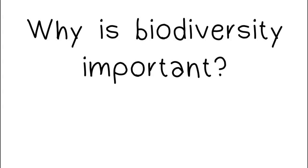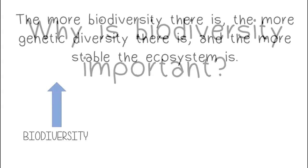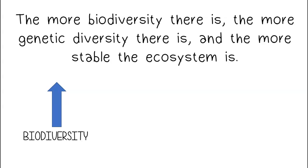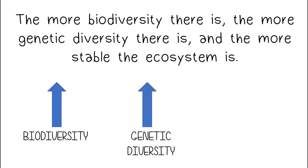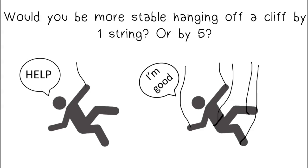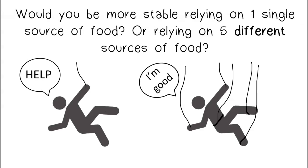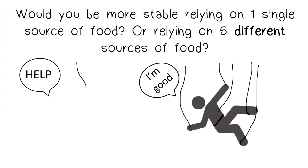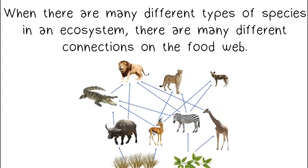Why is biodiversity important? Well, the more biodiversity there is, the more genetic diversity there is, and the more stable the ecosystem is. Would you be more stable hanging off a cliff by one string or by five? Would you be more stable relying on one single source of food or relying on five different sources of food? When there are many different types of species in an ecosystem, there are many different connections on the food web.